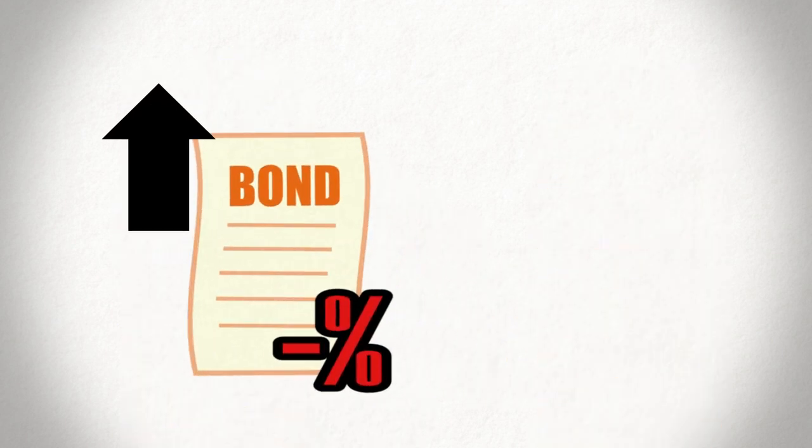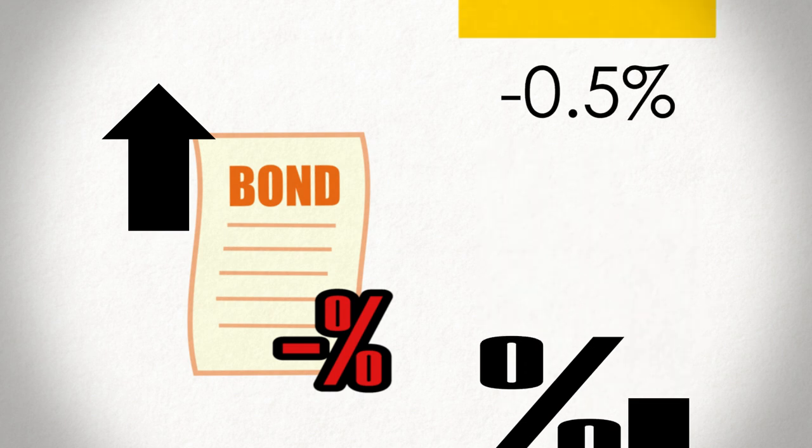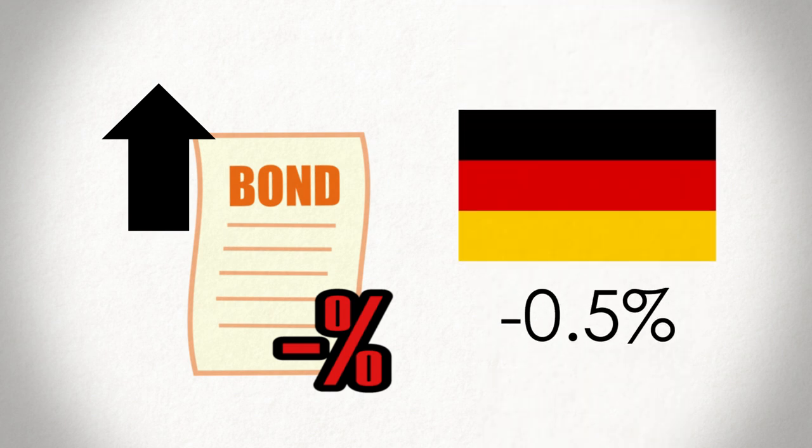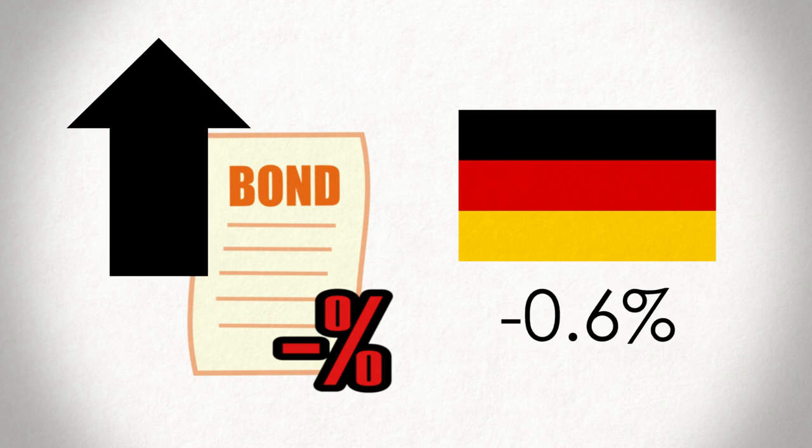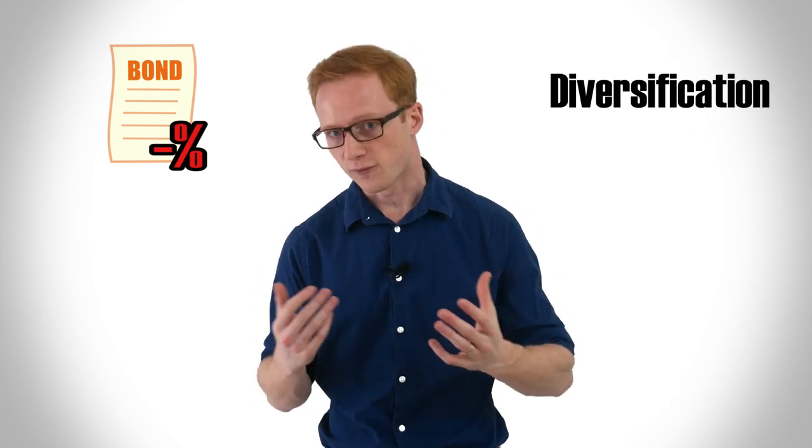Bonds, for example, increase in price when interest rates fall. And even though we have negative rates in countries like Germany, they could fall further still, something that would push bond prices even higher. Government bonds are also seen as a safe haven investment that sometimes increase in price when stocks fall. And they still technically provide some diversification benefit to portfolios.